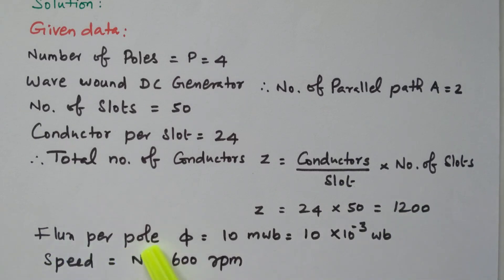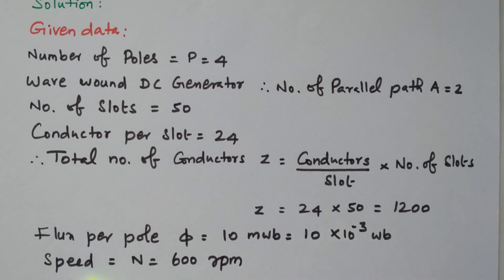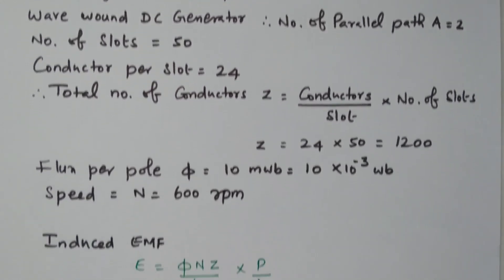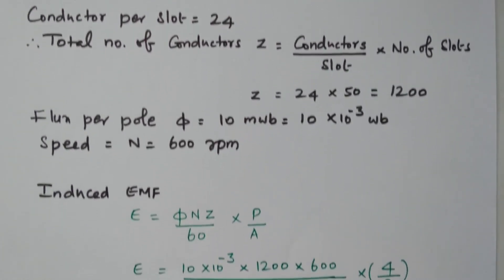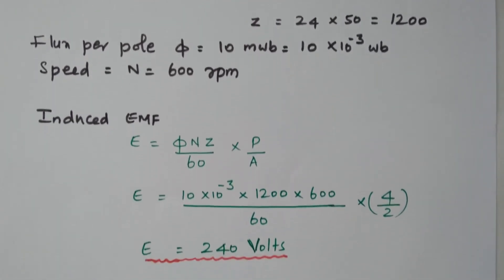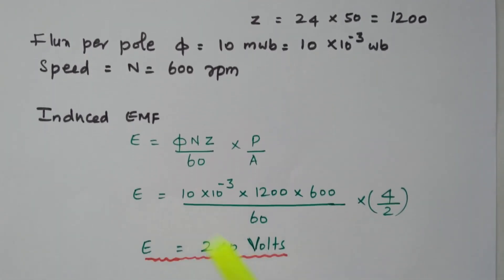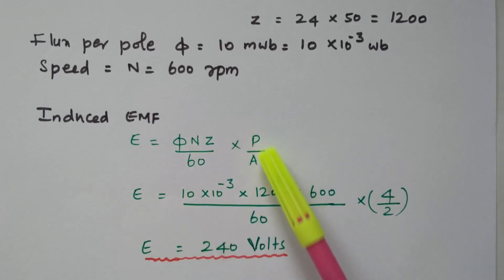The flux per pole is 10 milli Weber, i.e., 10 × 10⁻³ Weber, and speed is given as 600 RPM. These are all the data available. Now we will go to the induced EMF. The formula is: EMF = φNZ/60 × (P/A).